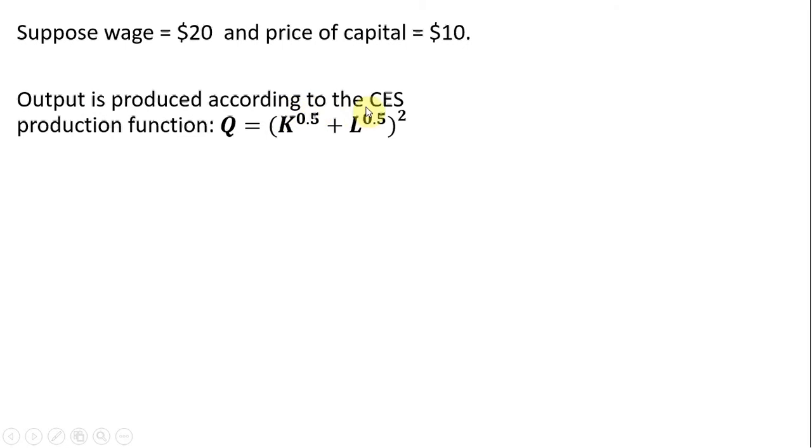Output is produced according to the CES production function. This is a short run problem, so K will be fixed at 9 units of output. We're going to plug this 9 units of output back into the production function.